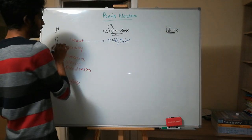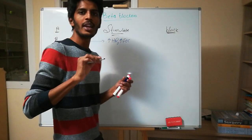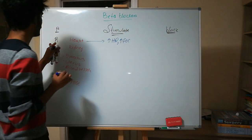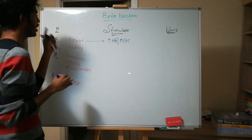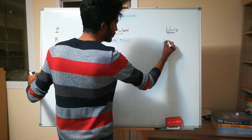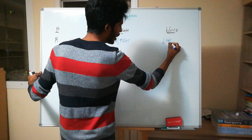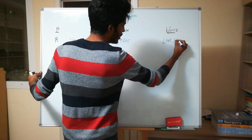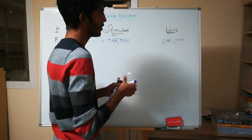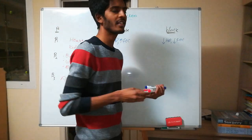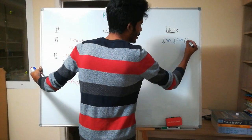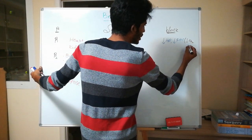Now let's see what happens if we block beta 1 receptors of the heart — exactly the opposite: heart rate goes down and force of contraction decreases. When force of contraction decreases, the oxygen demand for the heart will also decrease.